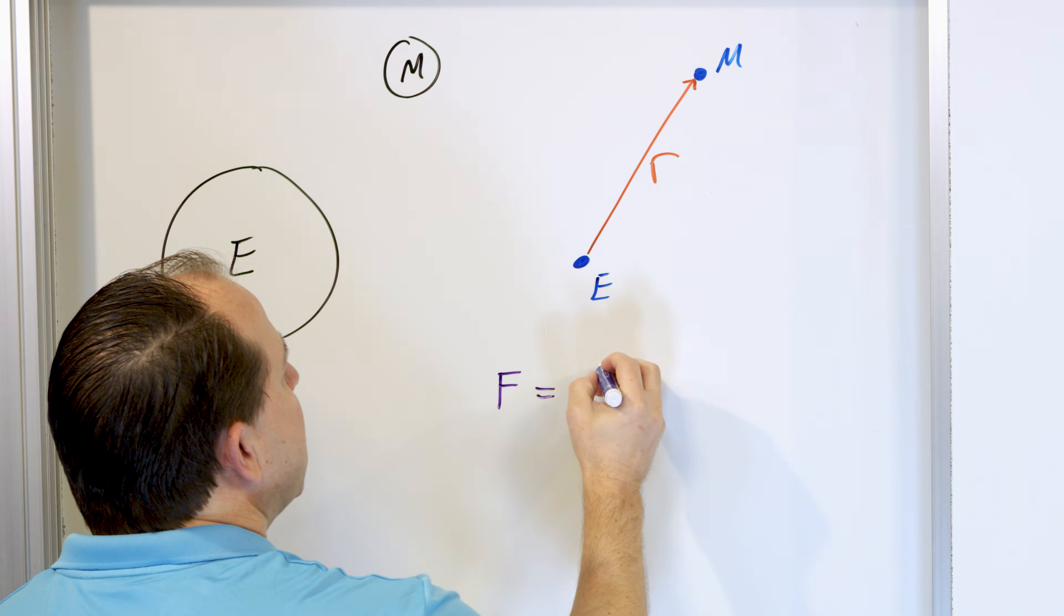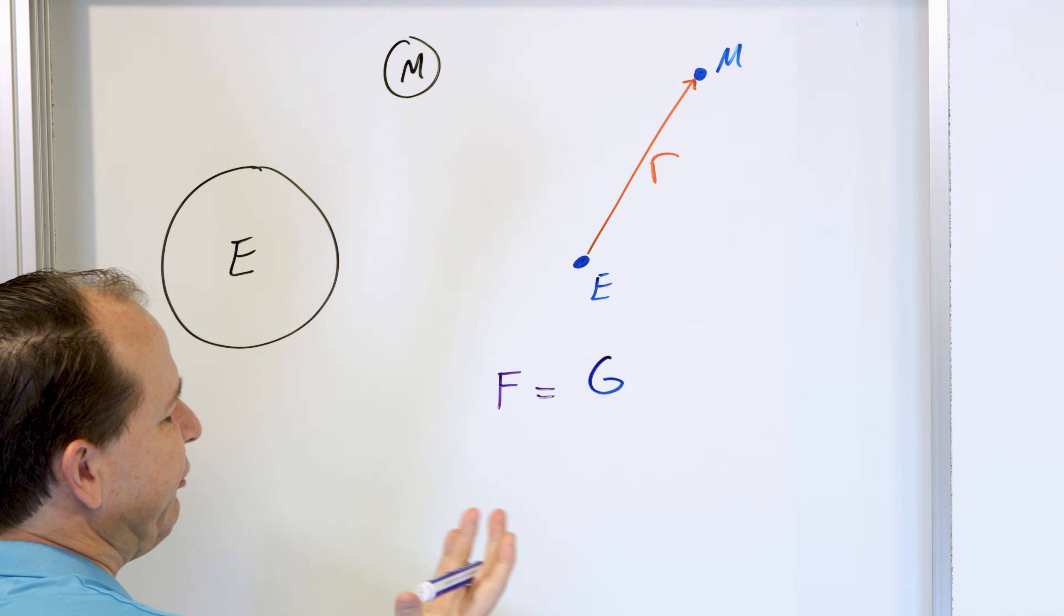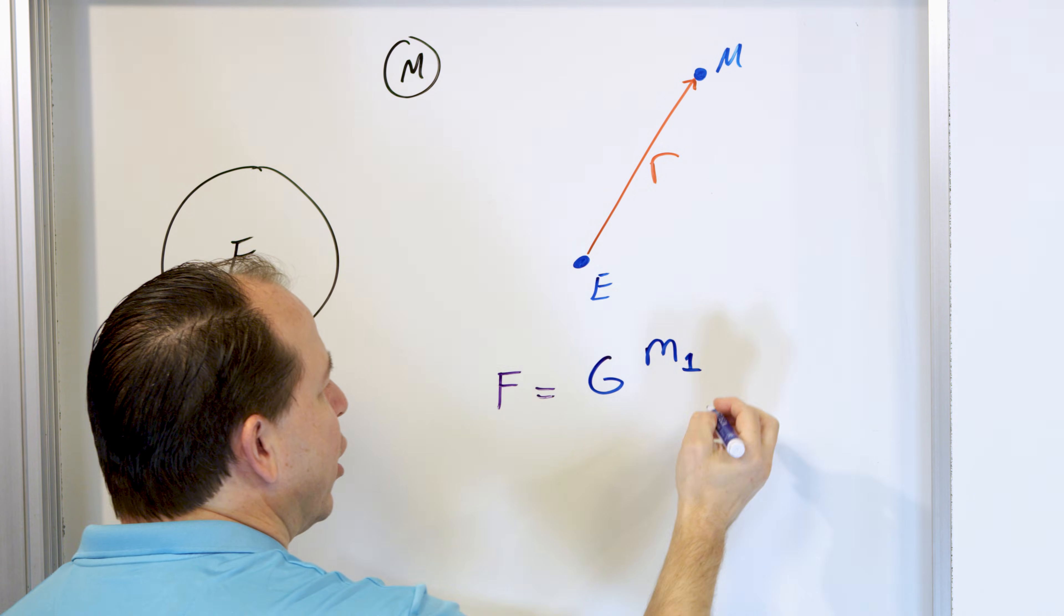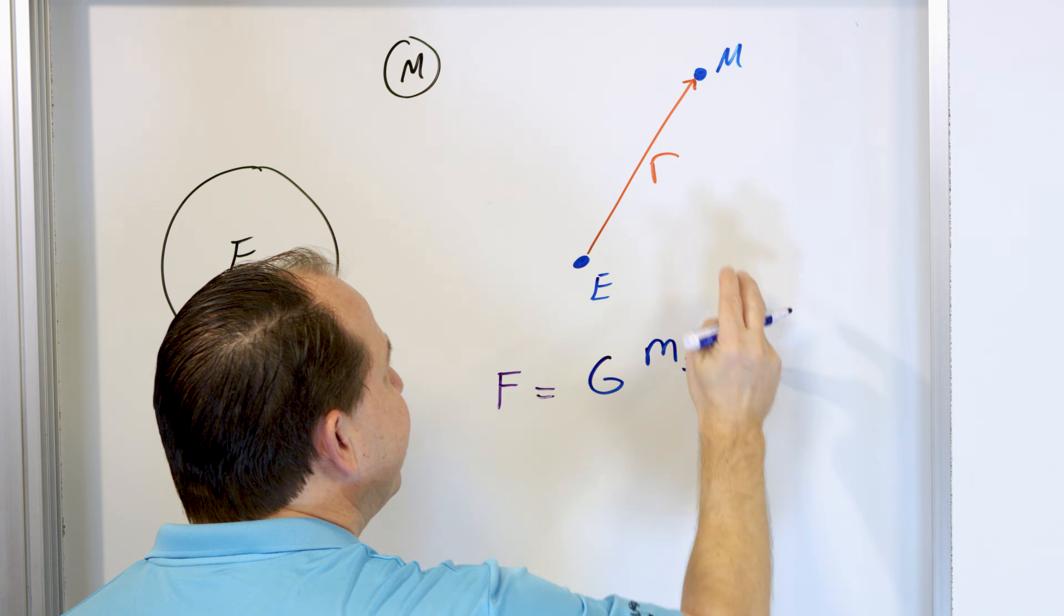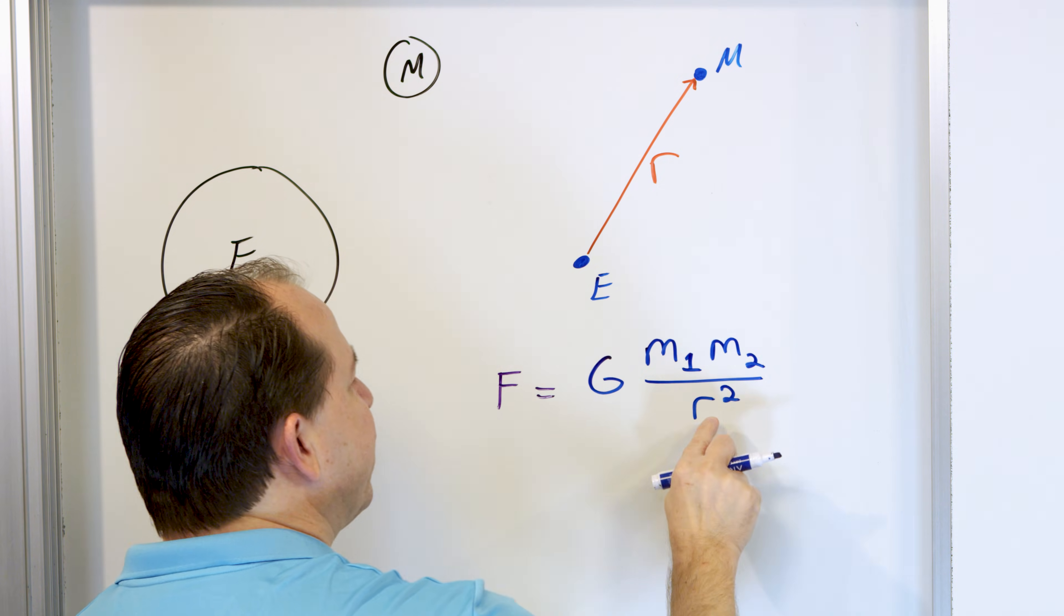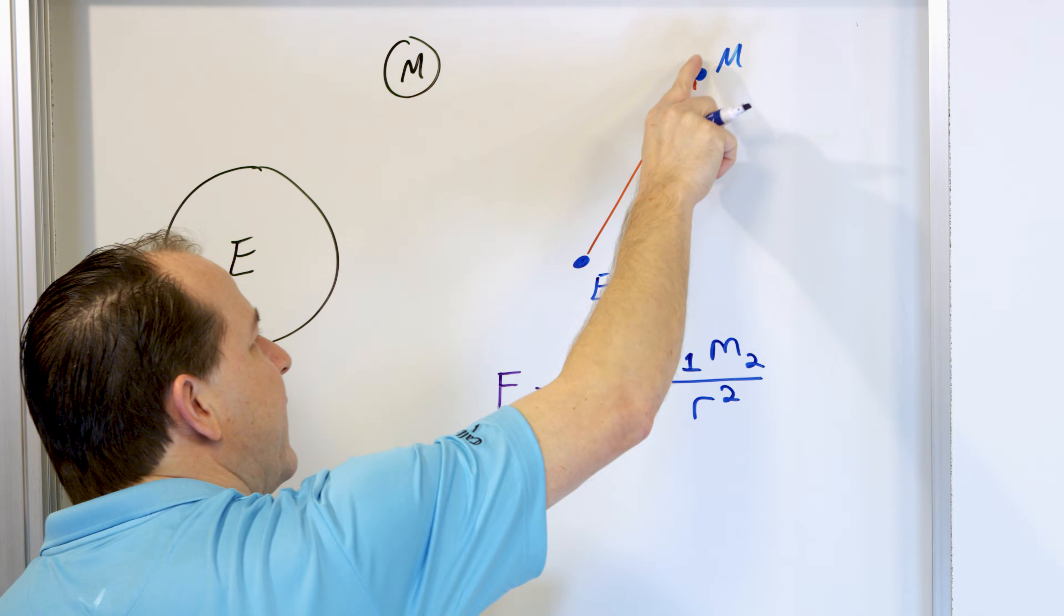times the mass of body number one, like the Earth, times the mass of body two, like the moon, and all of that stuff is divided by the distance between them, but squared, the distance between them.